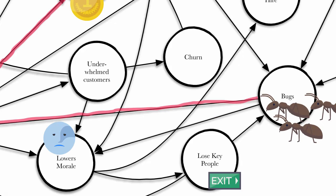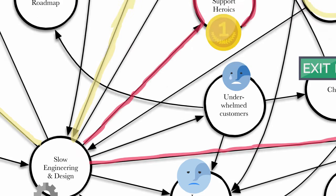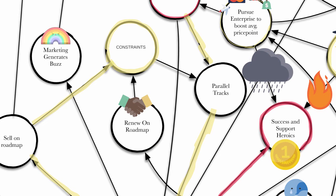Remember those early customers? Those early adopters? They're like, what the fuck? We believed in you guys. They're underwhelmed. Which causes churn. Or you can renew them on a road map promise. Which causes constraints and then parallel tracks the long and winding road.